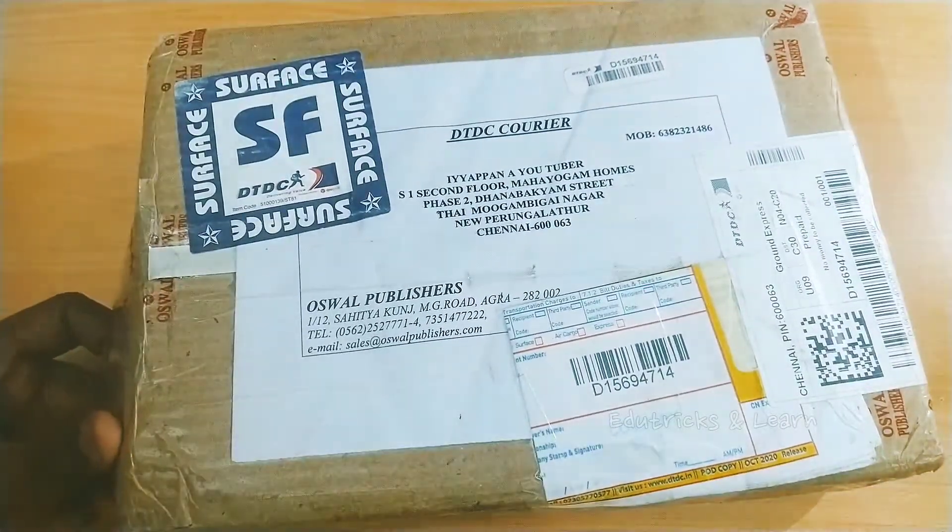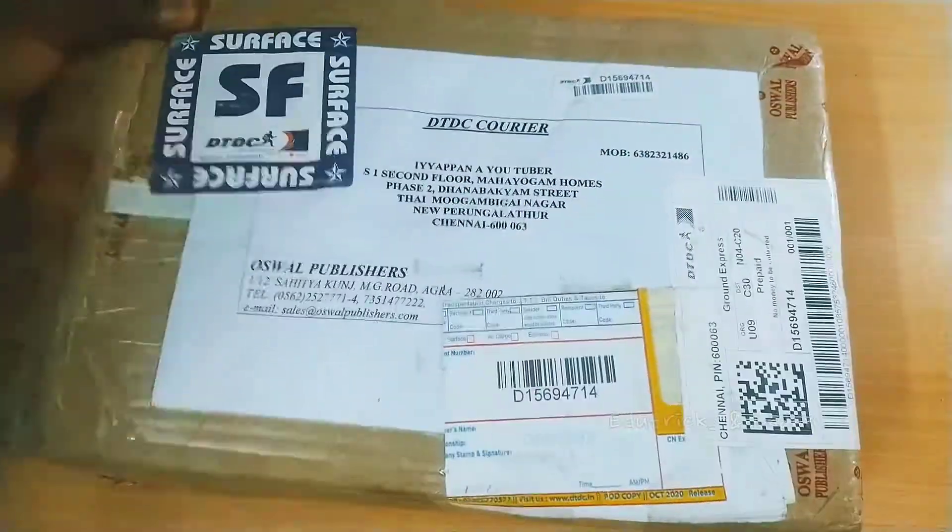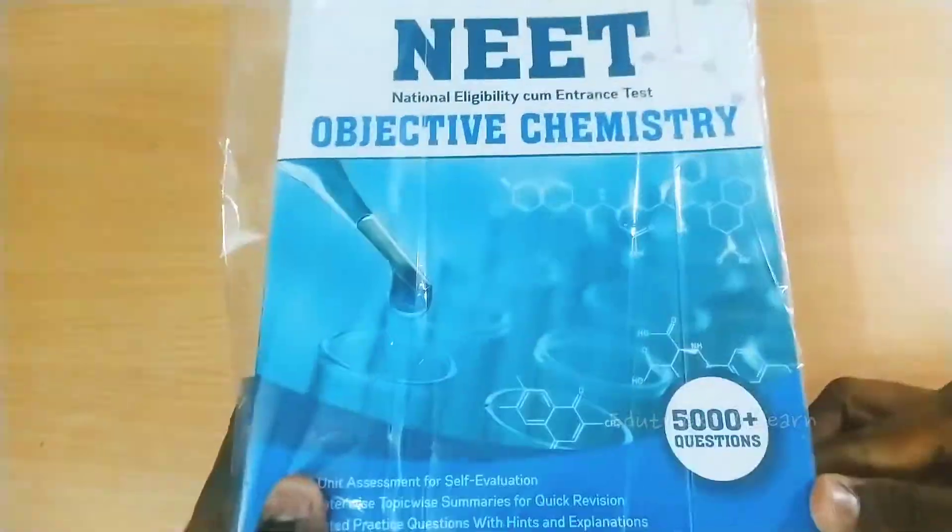There are 3 books in this series. Part 1 is biology which is already uploaded, part 2 is this chemistry book, and part 3 is physics. The 3 links will be uploaded in the description box. So don't forget to see all those, especially for NEET aspirants.